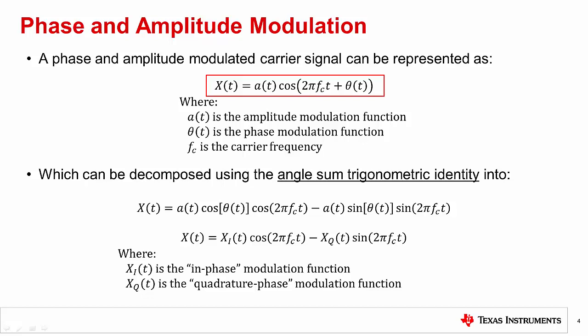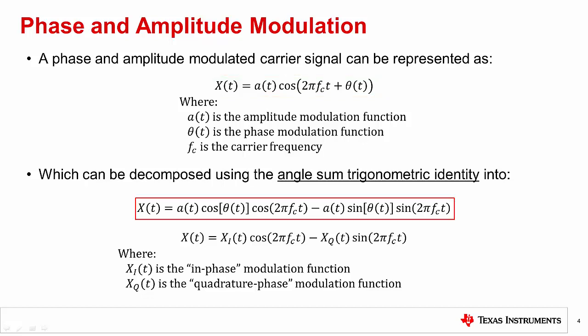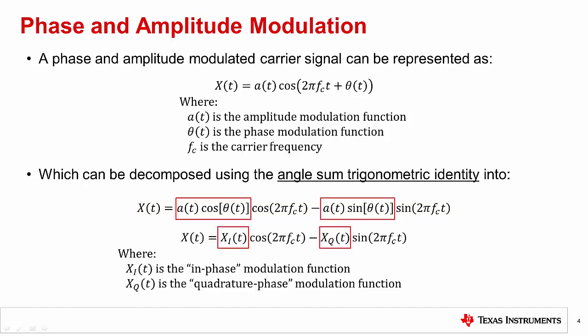Making use of the angle sum trigonometric identity allows us to decompose x(t) into separate sine and cosine carriers, each modulated in amplitude by A(t) and in phase by the respective sine and cosine of the phase modulation function θ(t). We can then redefine the amplitude and phase modulation for each carrier as functions called x_i(t) and x_q(t). These modulation functions are often referred to simply as I and Q. I is the in-phase modulation function and Q is the quadrature phase modulation function. The term quadrature comes from sine and cosine being 90 degrees out of phase from each other.